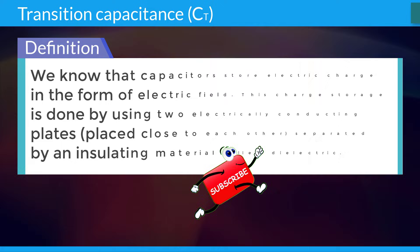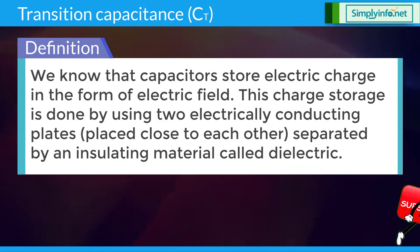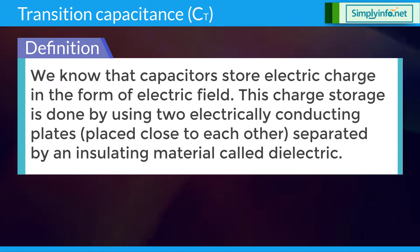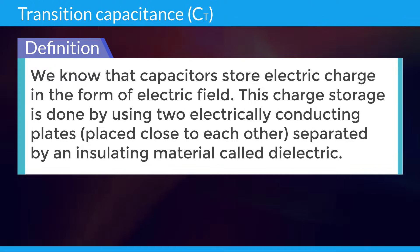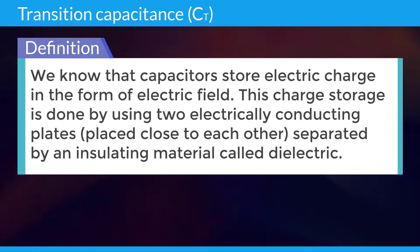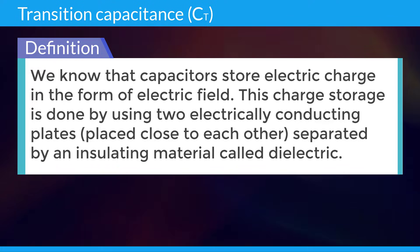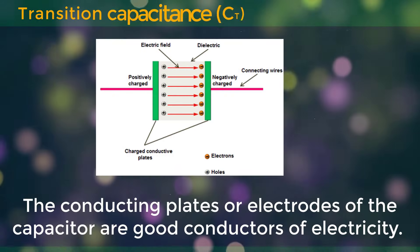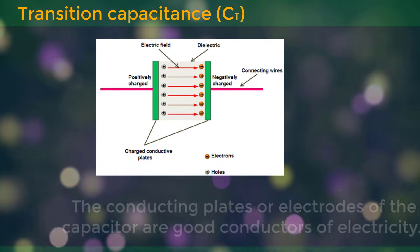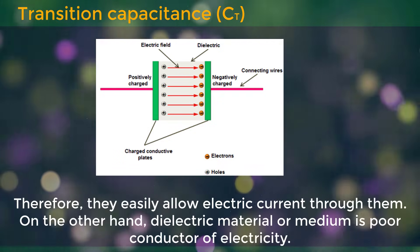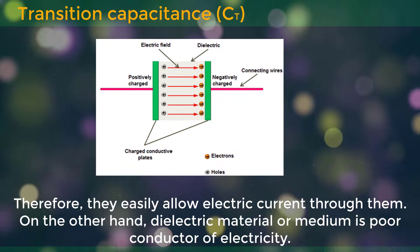We know that capacitors store electric charge in the form of an electric field. This charge storage is done by using two electrically conducting plates placed close to each other, separated by an insulating material called dielectric. The conducting plates or electrodes of the capacitors are good conductors of electricity. Therefore, they easily allow electric current to pass through them.